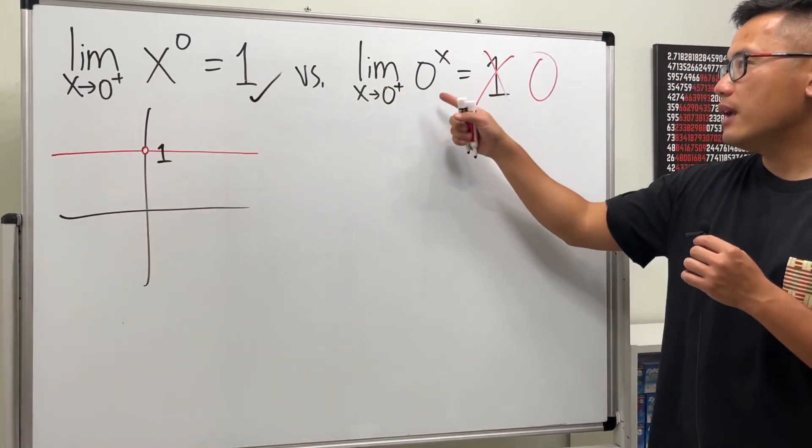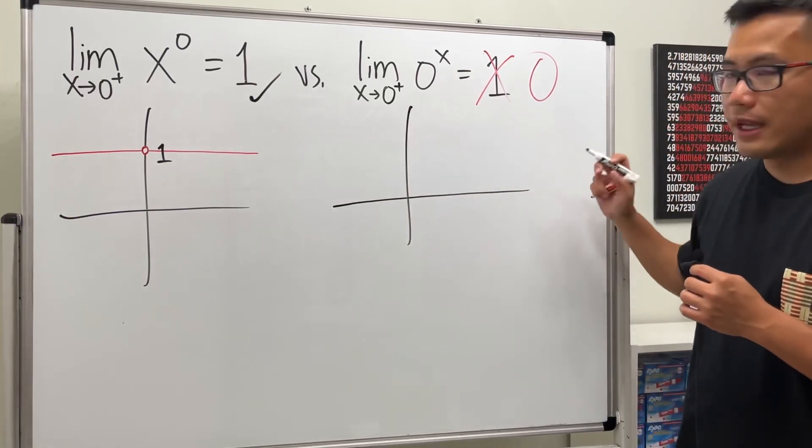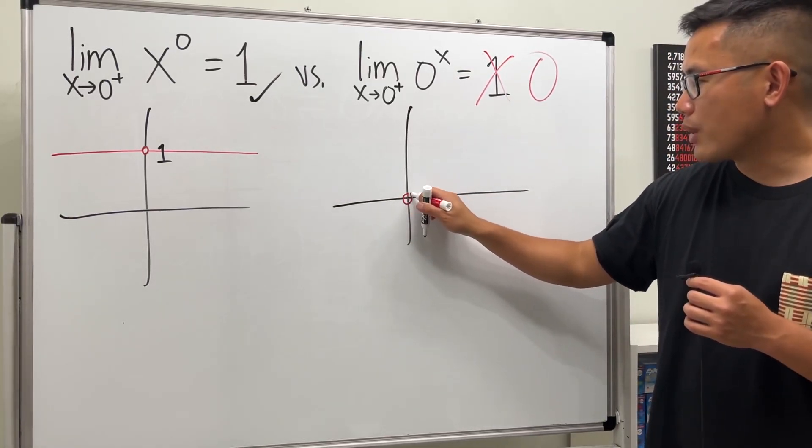However, if you look at zero to the x power, we will actually have the graph look like this. It's just this part right here.